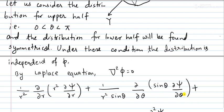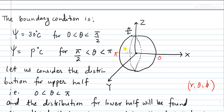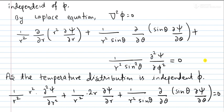In spherical polar coordinates, the coordinates are r, θ, and φ. Since the temperature distribution is symmetrical — the upper half and lower half are symmetrical due to the spherical shape — there is no need to consider the coordinate φ. This simplifies the problem, and we can ignore the φ coordinate.